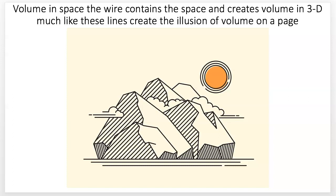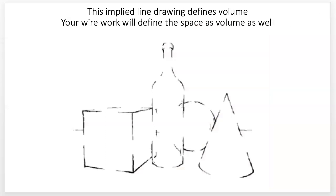This will give you the idea of volume — it'll be there because it'll have a volume, it'll be in space, but it won't be a solid volume. You can see it in this type of drawing where implied lines happen. Our eye connects it together, and same with the lines of the wire. So you need to be aware as you work about what kinds of volumes you're going to work with and how the lines interact with each other.